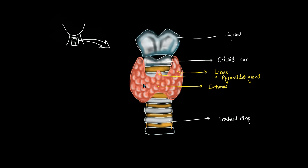The thyroid gland sits on the neck and surrounds the tracheal cartilage. The isthmus occupies the second to fourth tracheal cartilage rings. The lower extent of the lobe can extend up to the sixth tracheal cartilage, and the upper extent can reach up to the oblique ridge of the thyroid cartilage.